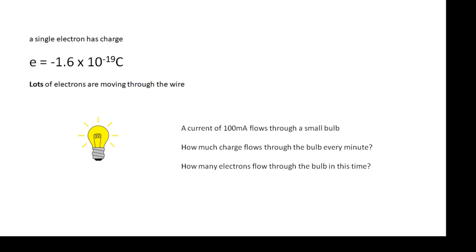Let's look at this question. A current of 100 milliamps flows through a small bulb. How much charge flows through the bulb every minute? How many electrons flow through the bulb in this time? Well, for the amount of charge, we would do Q equals It. So 100 times 10 to the minus 3 times 60 is 6 coulombs. How many electrons is that? If we divide 6 by the charge on an electron, we get a very big number.